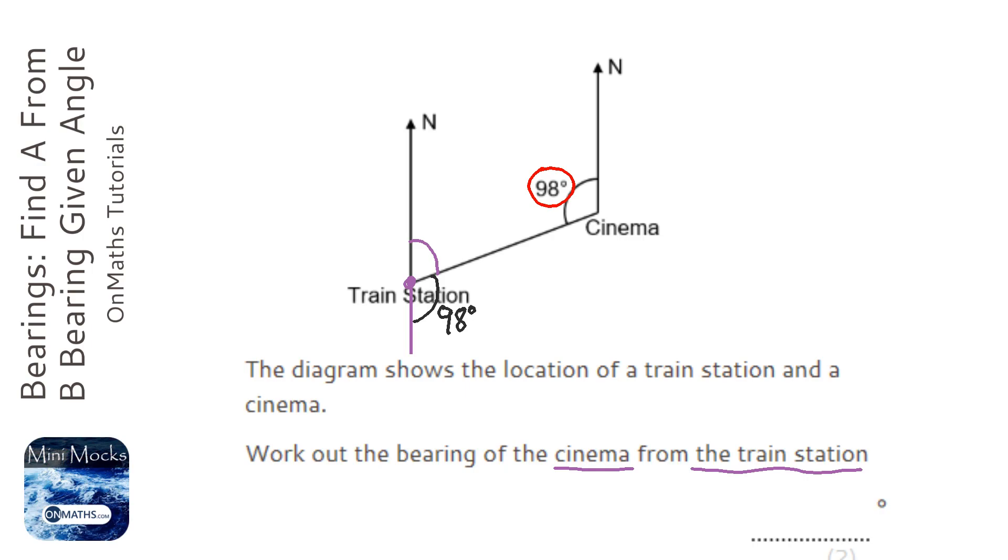Therefore, if that's 98 and the whole thing, this whole thing here is a straight line, all I need to do is do 180 take away 98. So we're doing 180 take away that 98 to work out the angle, which is 82 degrees.